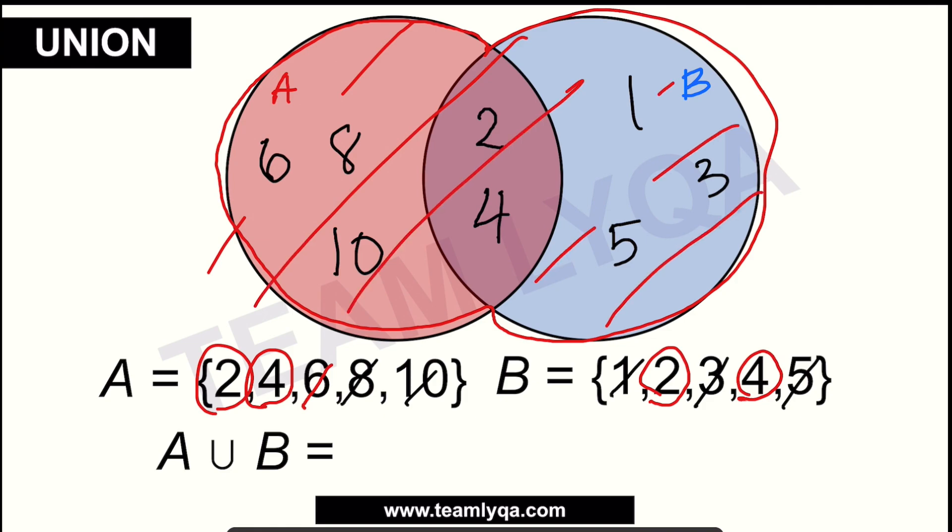I've written all the contents of A. Now let's go to B. You have 1, 3, and 5. Now, if we're talking about the union of set A and B, what is it? This is all of this. So to see it better, everything. That's it. The entire thing. That's the union.